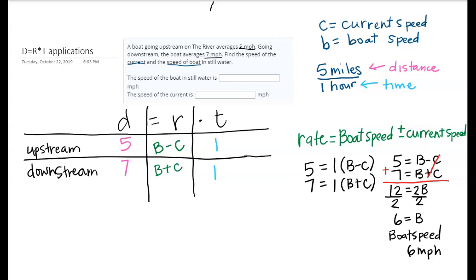I would be guessing that my current speed should be less than that. There's one of my answers. Just like you've done before with the elimination method, once you find one of your variables then you can plug that back in to find the other one. I'm going to use the equation 7 equals B plus C and instead of the B I'm going to put a 6 in there because that's what we said B is.